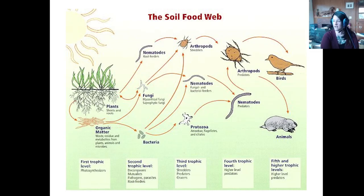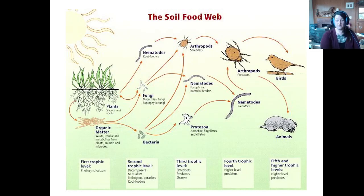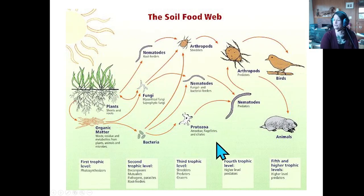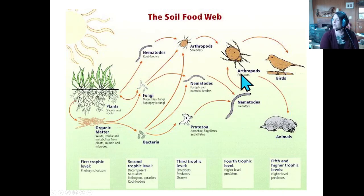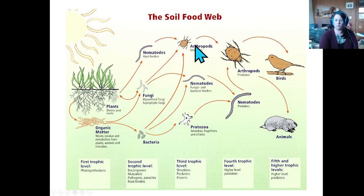You have nematodes that are fungal feeders and bacterial feeders, and also arthropods — our shredders — that shred up material and create more structure for the soil. They love to eat fungi that have eaten plant roots and shoots. It's like a cycle that keeps repeating. Nematodes, arthropods, protozoa — for nematodes you want to see fungal and bacterial feeders, and they'll have a different morphology than predatory or root-feeder nematodes.